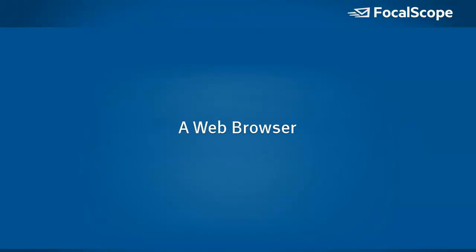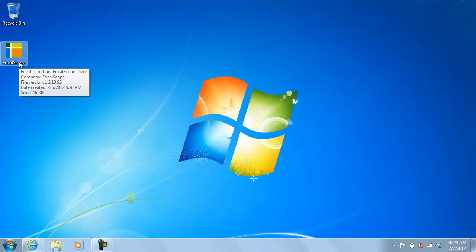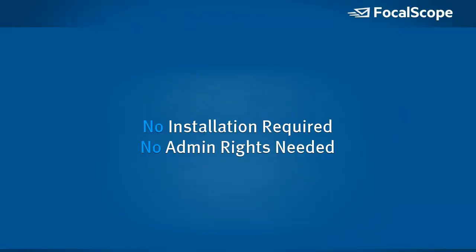Focalscope can be accessed via either web browser or using the Focalscope ThinClient. The ThinClient is a small .exe file that you download to your desktop and use as a shortcut to access your Focalscope instance. Users don't need to have administrator privileges to download and run the ThinClient.